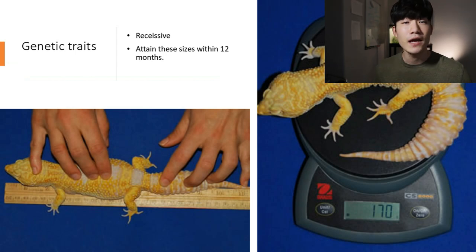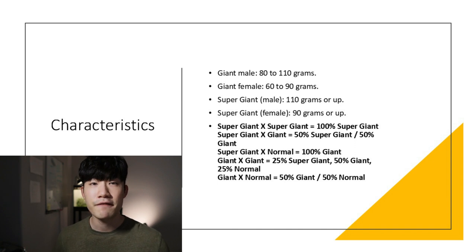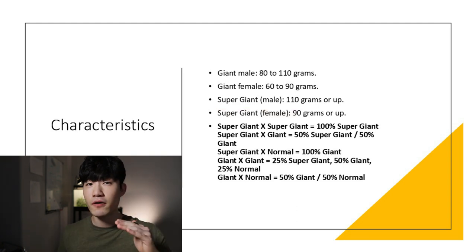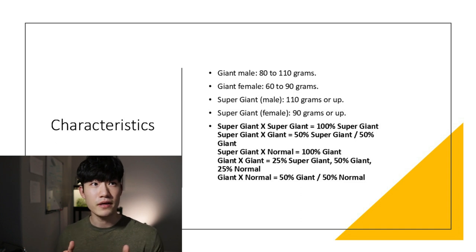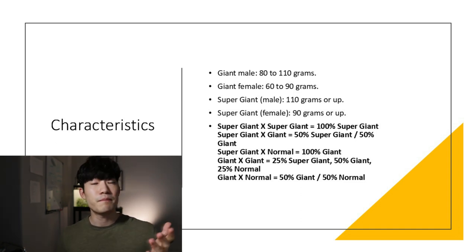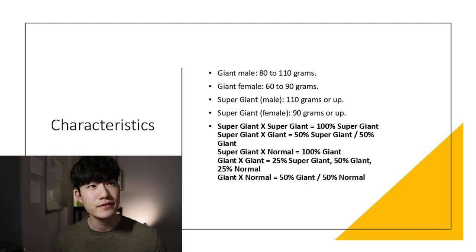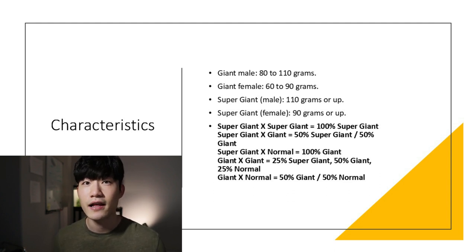For the characteristics: giant males should be somewhere between 80 to 110 grams, giant females between 60 to 90 grams. Super giant males should be around 110 grams or up, and super giant females around 90 grams or up. Super giant and giant males and females will be labeled differently, so make sure you know your gecko's sex. The possibility for super giant bred to super giant is 100%. This looks similar to the max snow inheritance pattern, and I believe it is classified as recessive because there are both super giant and giant forms.